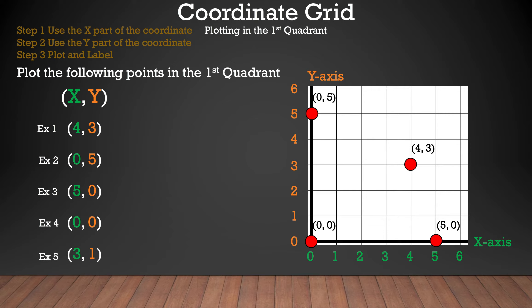Now let's take a look at the last example. This time we have a three for the X, so we're going to move three spaces to the right. And then we have a one for the Y, so we're going to move one space up. Now we plot, we label, and we're done with that example.